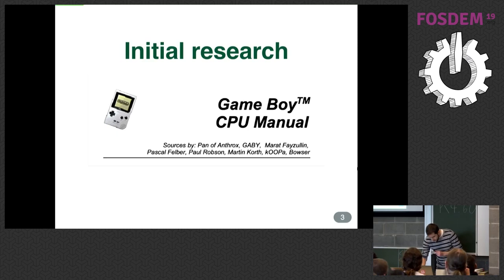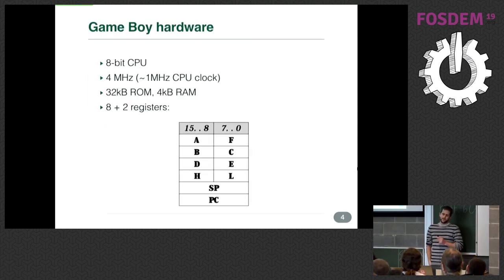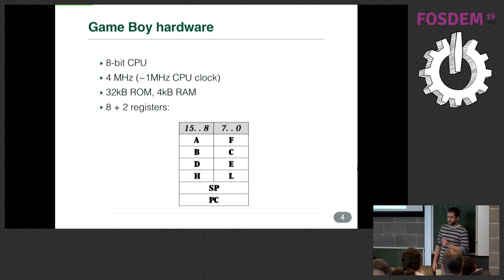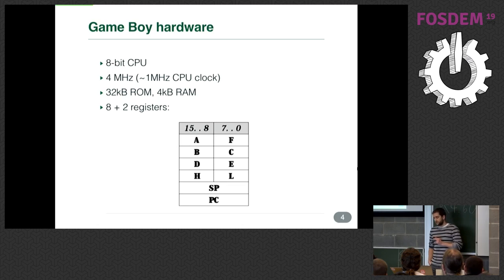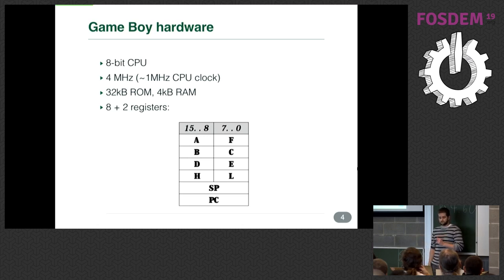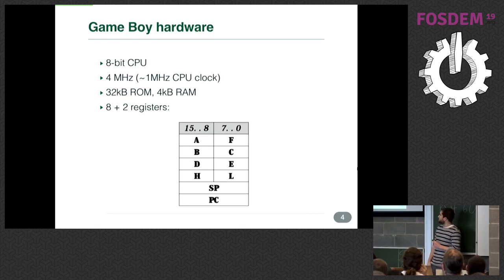Let's talk about the Game Boy architecture. The CPU is a custom mix between the 8080 and the Z80 CPUs. The internal clock runs at 4 MHz, but every instruction is a multiple of four cycles, so in practice the CPU runs at about 1 MHz. There are 32 kilobytes of addressable memory, but only 4 kilobytes are working RAM. There are another 4 kilobytes hosted in the cartridge. There are eight registers A through F — most are 8-bit, except the program counter and the stack pointer.